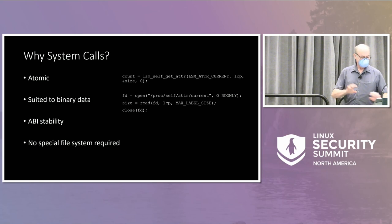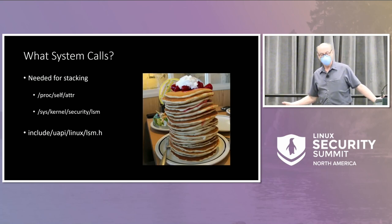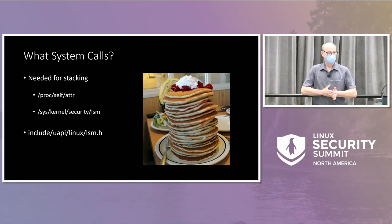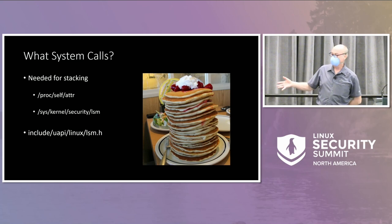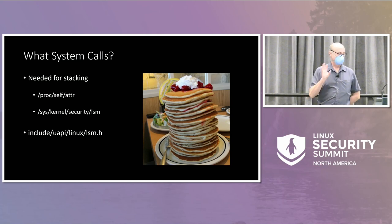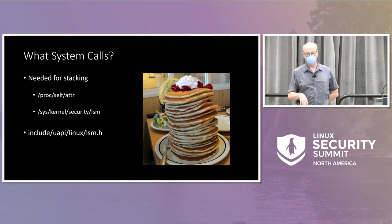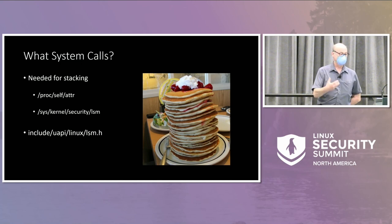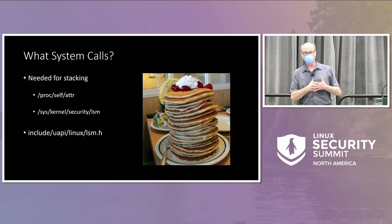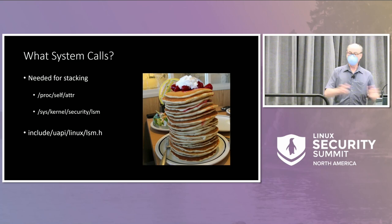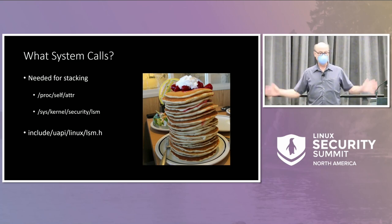So if we're going to do system calls, what system calls are we going to do? We're going to do the ones we need to have for stacking, because that's what I need to get done. We want to replace the things you're getting from proc/self/attr about the information about your own process, and the list of LSMs — because you need the list of LSMs if you're going to decide what to do based on what LSMs you're using. So we're going to actually have an LSM API, finally.